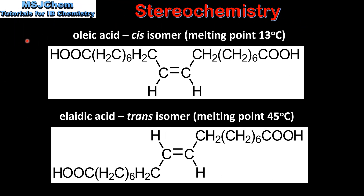Next we look at the structures of oleic acid and elaidic acid. Oleic acid is the cis isomer and elaidic acid is the trans isomer. If we compare the melting points of the cis and the trans isomer, we can see that the trans isomer has the higher melting point.